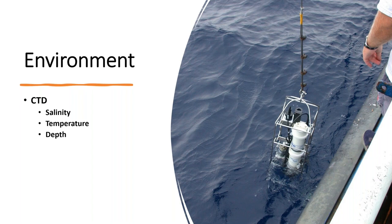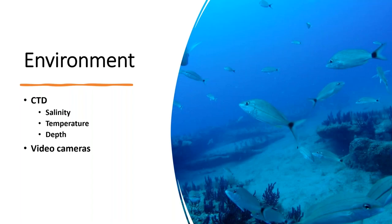After deployment of the video traps, we also take environmental information by deploying a CTD, which measures salinity, temperature, and depth among other things for every set of traps. This additional information helps us explore how these variables can affect the catch so we can adjust for that later if needed. The video cameras also provide information on habitat type — you can see ledges and rocky outcrops — telling us what proportion of the ocean floor is covered by this habitat, as well as current direction and speed.